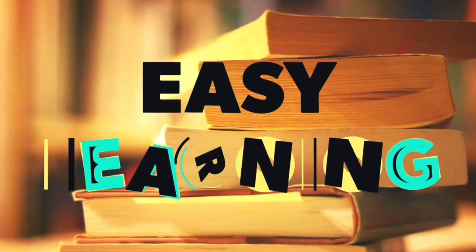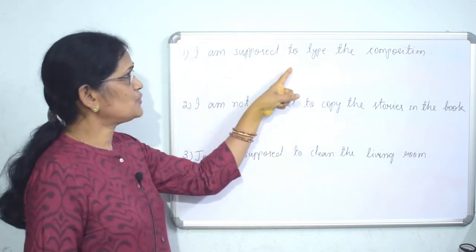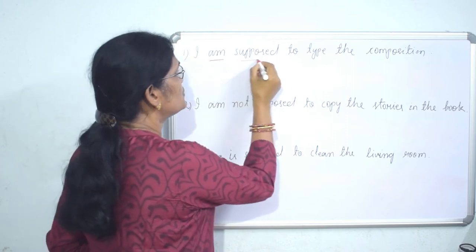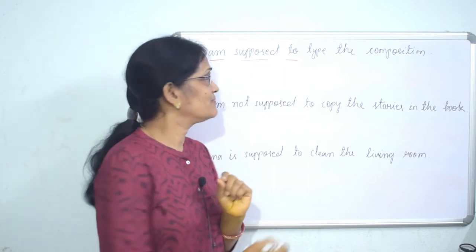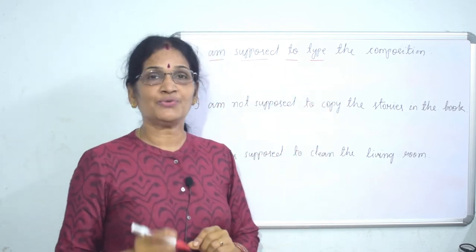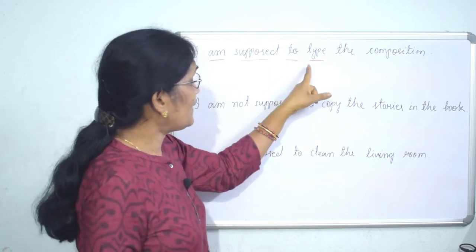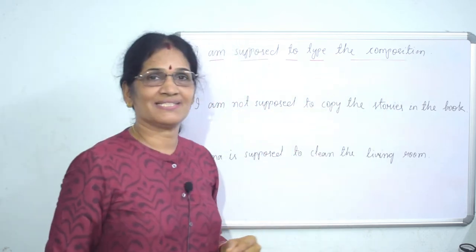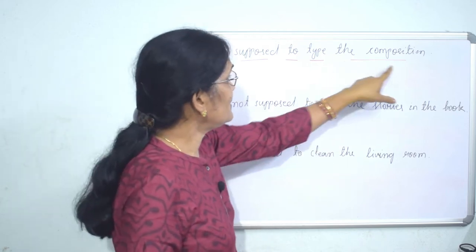Let's start the concept. The structure is 'be supposed to,' then what comes next is the verb type. We have to ask a question to the verb with a WH word — 'what' — to get the object type. For example: 'I am supposed to type the composition.' The composition is the object in this sentence, and that object will become the subject in the passive structure. So what will be the composition?